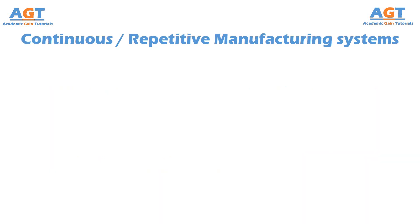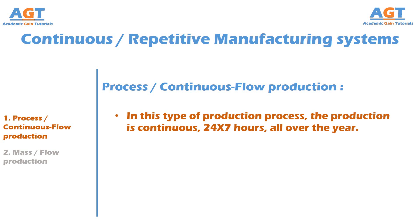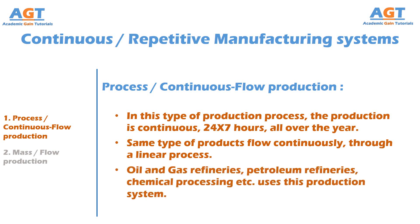Now let's look at the classifications of continuous production systems. Number one: process, or continuous flow production. In continuous flow production, most of the work is done by machines rather than humans. The production is continuous 24 hours, 7 days a week, all days in a year. There is very small variation in the products, and the same type of products flow continuously through a linear process. This system is used in oil and gas refineries, petroleum refineries, and chemical processing, where production is required continuously day and night, all year.